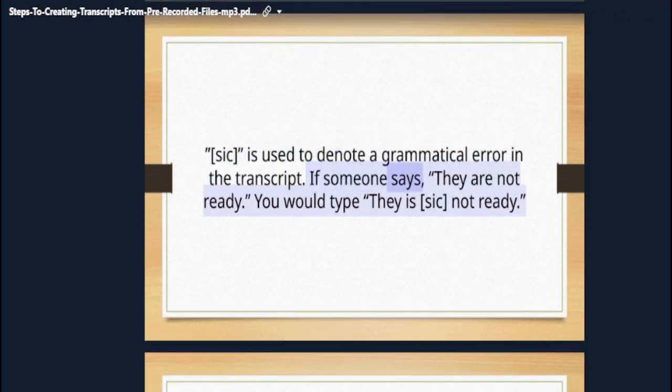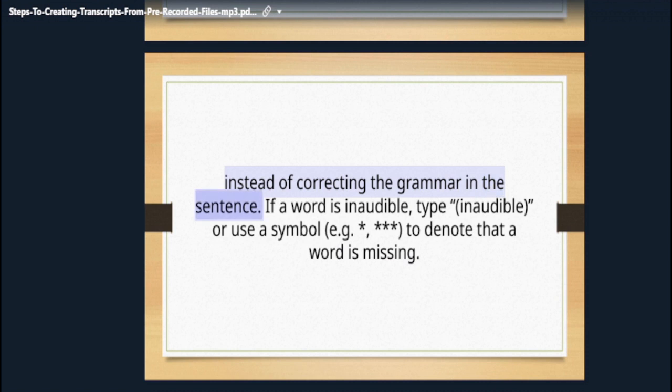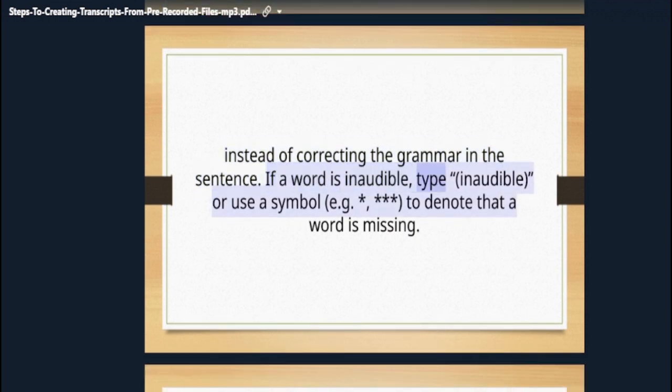Sic is used to denote a grammatical error in the transcript. If someone says, 'they are not ready,' you would type 'they is [sic] not ready,' instead of correcting the grammar in this sentence. If a word is inaudible, type 'inaudible' or use a symbol, e.g. asterisk, to denote that a word is missing.